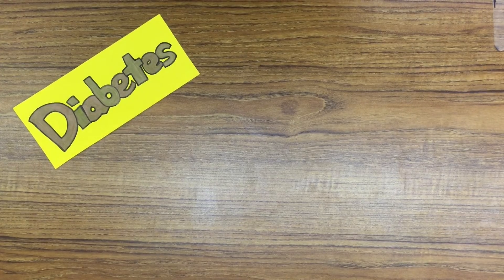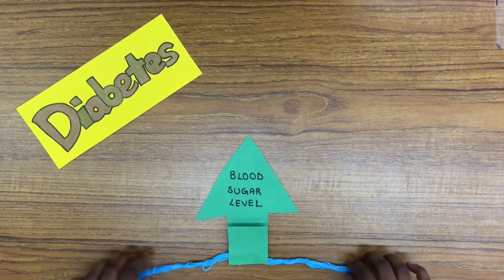Diabetes is a metabolic disease in which the body cannot produce enough insulin, thus resulting in a high blood sugar level.